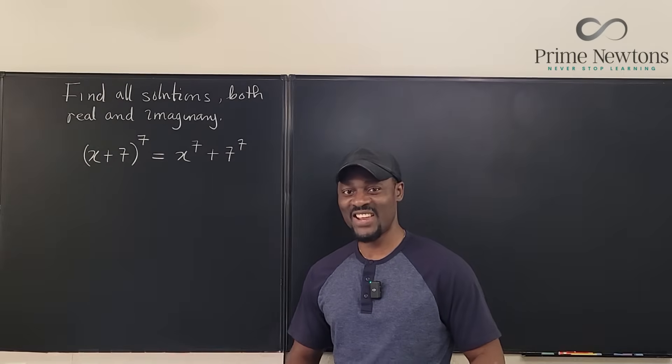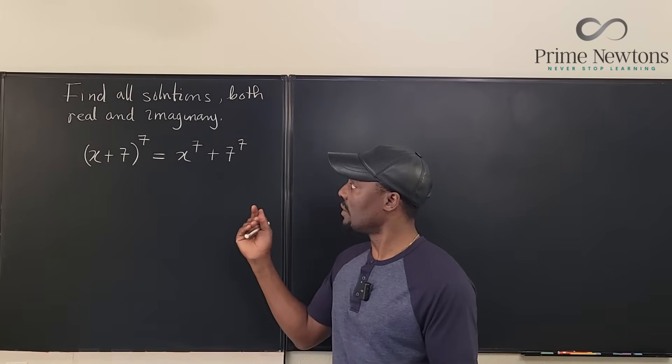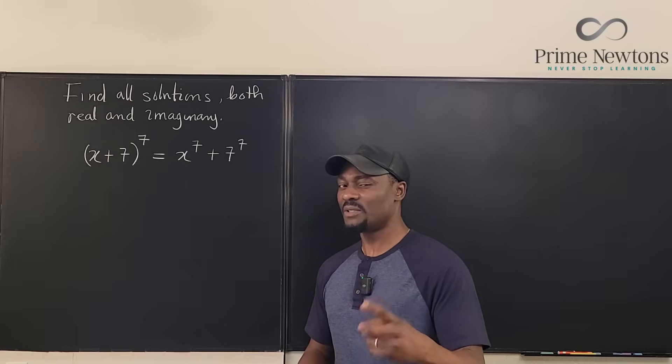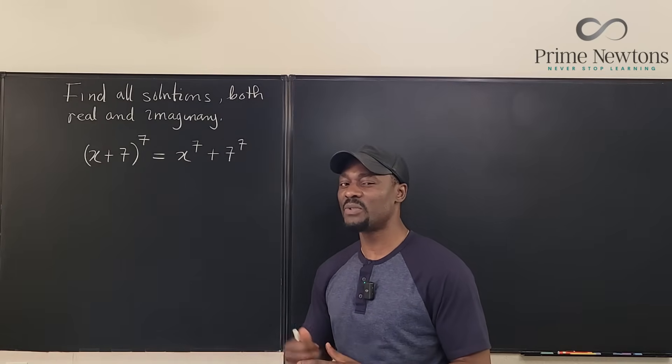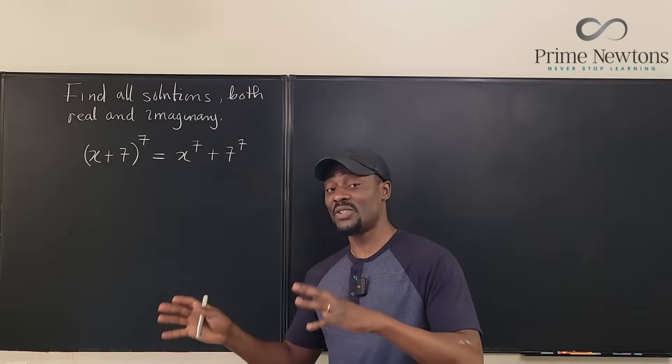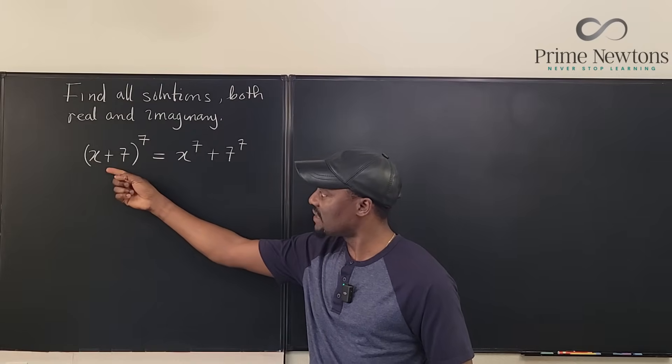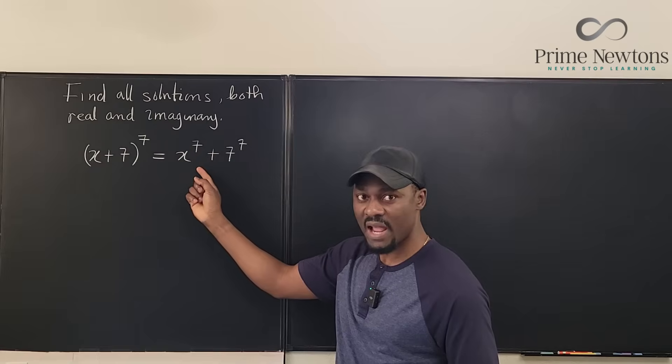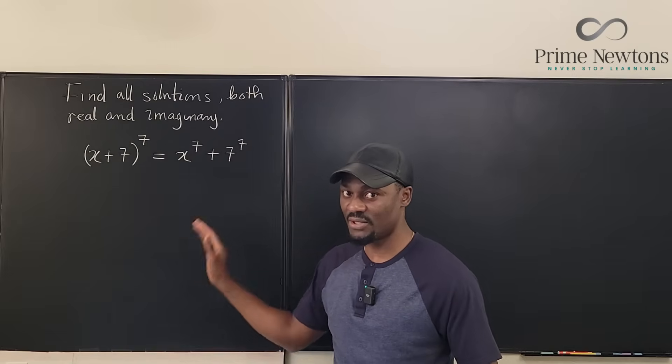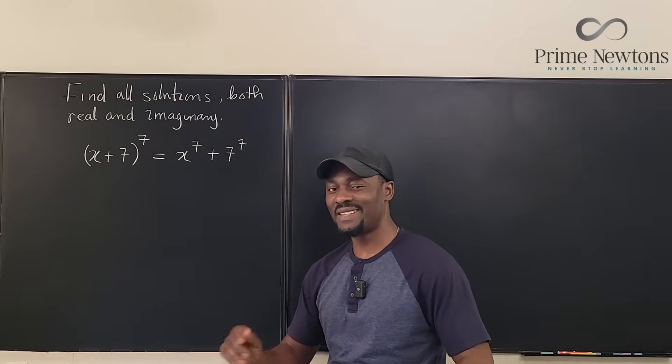Welcome to another video. This is called a septic equation because it's a seventh degree polynomial on either side. One question I was thinking about before is how many solutions am I supposed to get? Am I supposed to get seven solutions or six solutions? We're going to get to that part later, but let's get into the video.